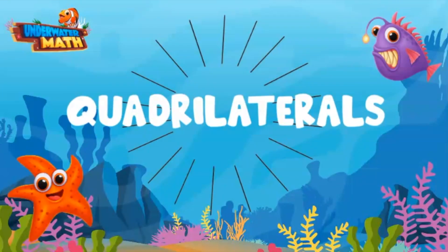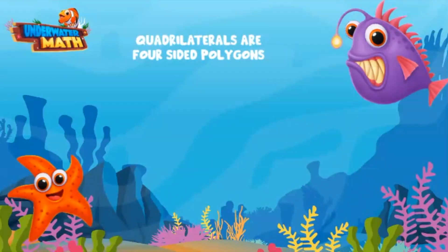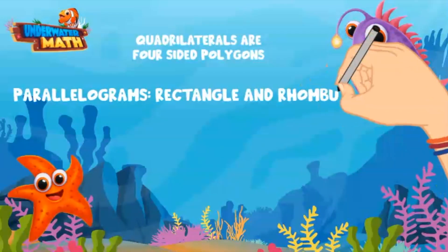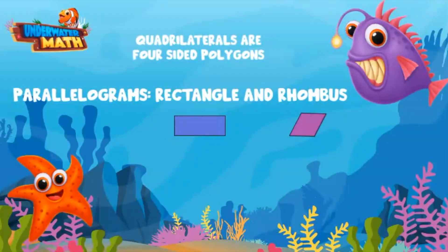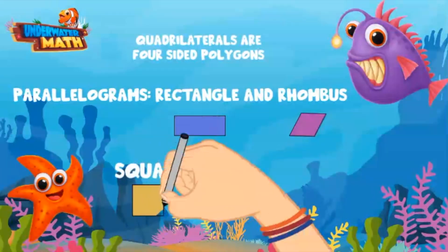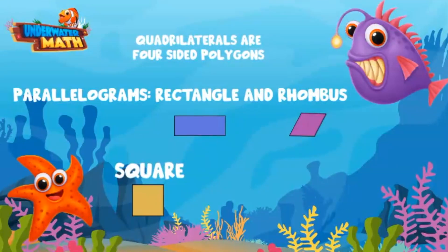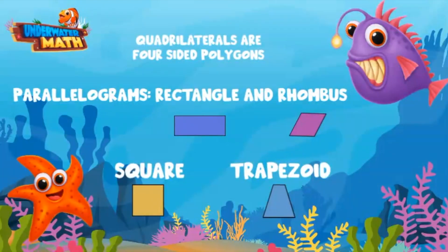Quadrilaterals are four-sided polygons — two-dimensional, closed shapes with straight sides. They include parallelograms, quadrilaterals with two pairs of parallel sides, such as a rectangle and a rhombus. A square is also a quadrilateral, a special rectangle and a special rhombus. Lastly, there are trapezoids. They only have one pair of parallel sides. Squares and rectangles have right angles, angles that measure 90 degrees.